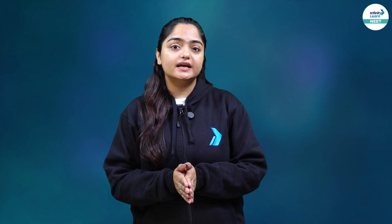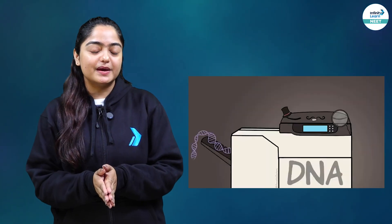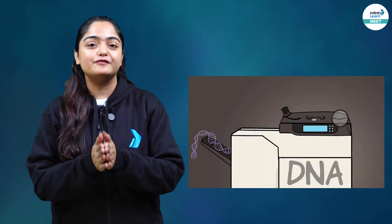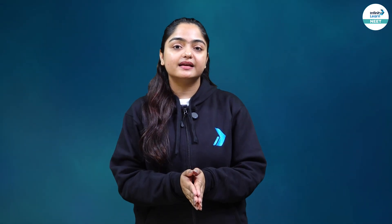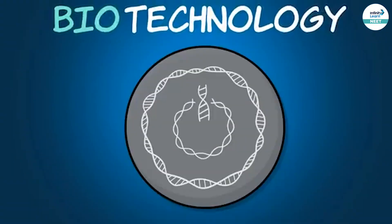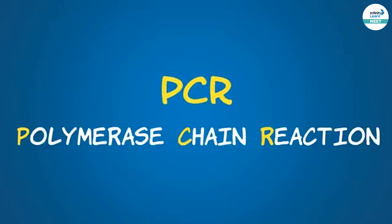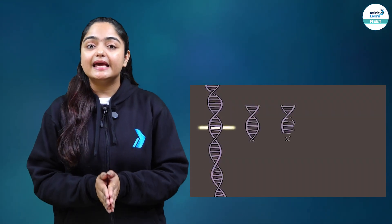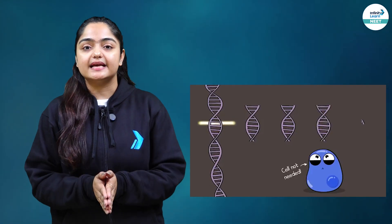PCR is basically a process, or you can just call it a copy machine — but not for paper. It is a copy machine for DNA. When we talk about biotechnology, this is one of the major processes that comes under biotechnology, and it's termed as PCR or polymerase chain reaction. With the help of this process, you can actually make millions of copies of DNA even without the need of a cell.